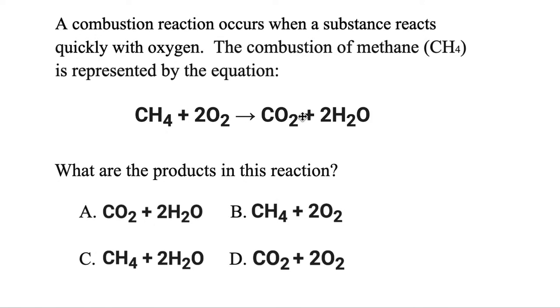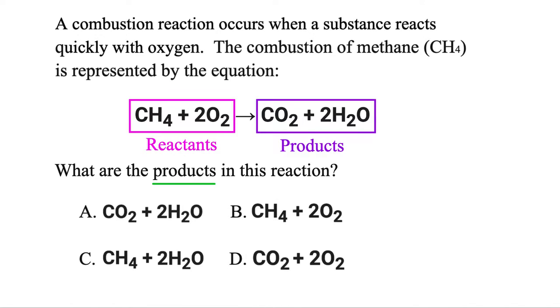Here we're given a chemical reaction. And we're asked, what are the products in this reaction? Well, the things on the left side are called the reactants. The things on the right side, the products. So in this case, we're just looking for the things on the right side. And A has them, so those are the products here. So as long as you know the terminology, you're good there.